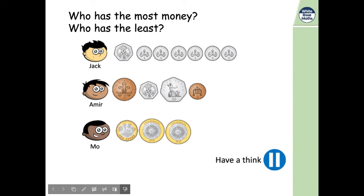Okay, so let's go through. 20, 5, 30, 35, 40, 45, 50 for Jack. Okay, 50 pence. Remembering to put the P sign after it so we know that it is pence, not pounds.